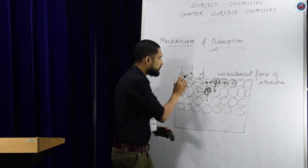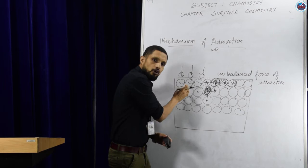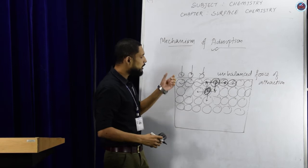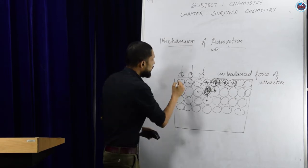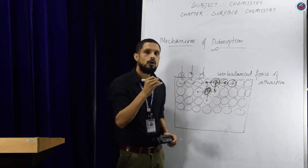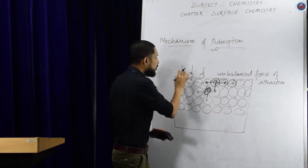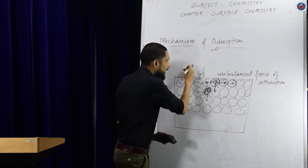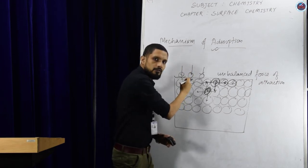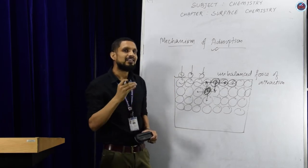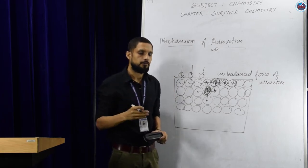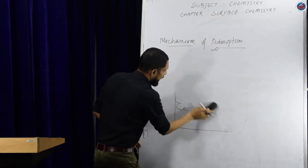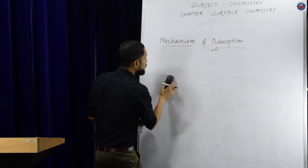There is a force of attraction between the molecules of adsorbate and the molecules of adsorbent. This force of attraction can be either strong or weak. Based on the nature of attraction between the adsorbate and the adsorbent, adsorption is classified into two types: physical adsorption and chemical adsorption.